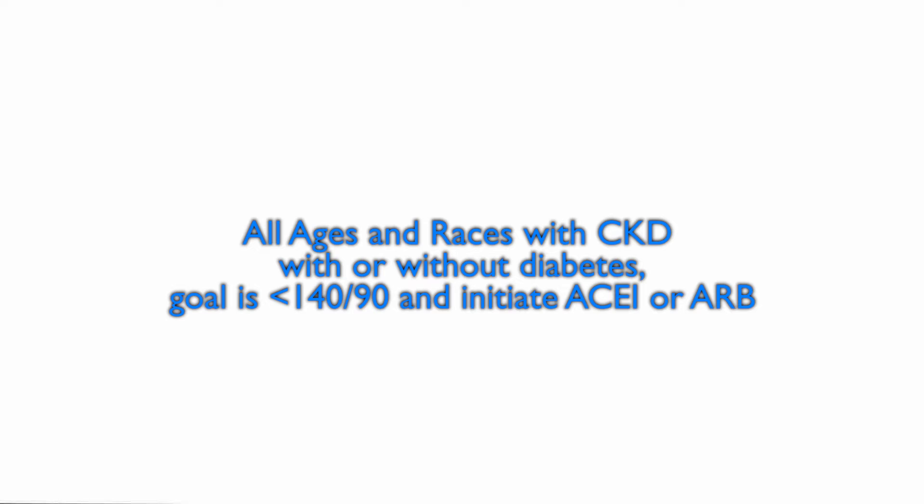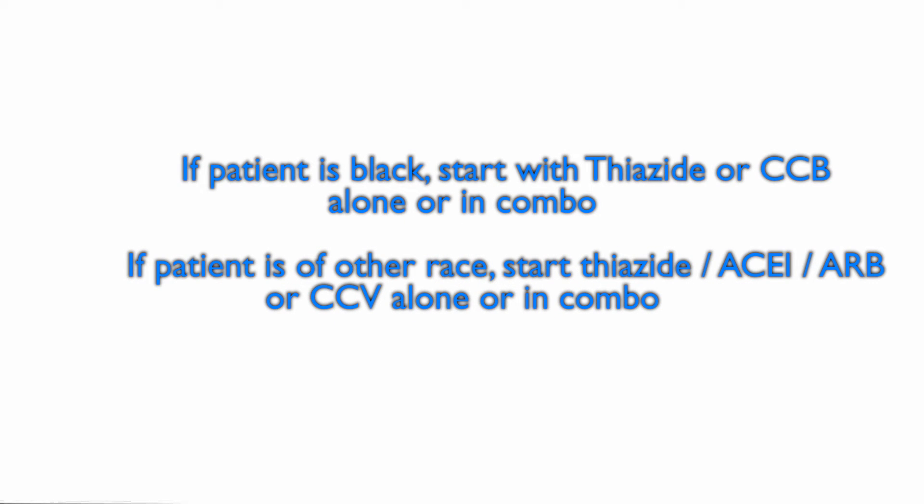In general, for patients in the categories of age ≥60, age <60, or all ages with diabetes but no chronic kidney disease, you initiate therapy. If the patient is not black, you start with a thiazide, an ACE inhibitor, an ARB, or a calcium channel blocker, alone or in combination. If the patient is African American or black, you start with a thiazide diuretic or a calcium channel blocker, alone or in combination.